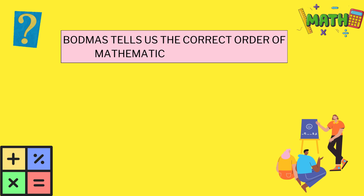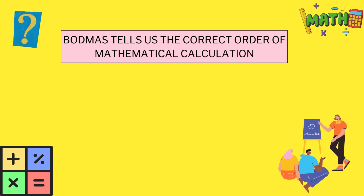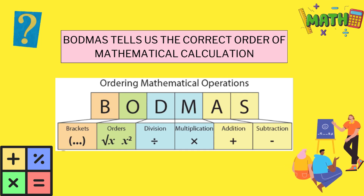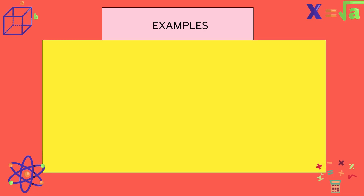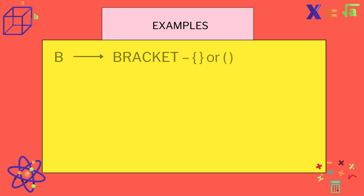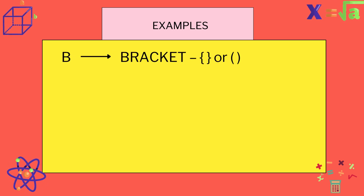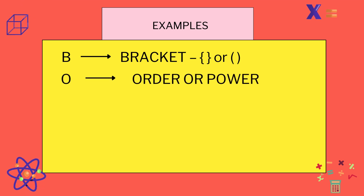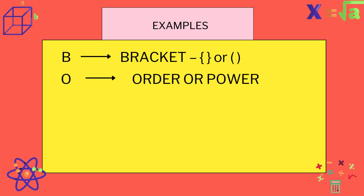In BODMAS: B stands for Bracket, O stands for Orders or Power, D stands for Division, M stands for Multiplication, A stands for Addition, and S stands for Subtraction. In the order of operations, the first priority is given to brackets, then to orders or powers, followed by division or multiplication, and finally the least priority is for addition and subtraction.